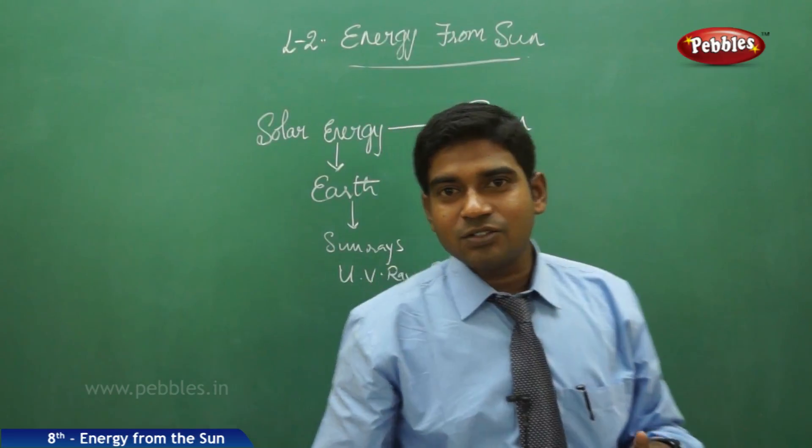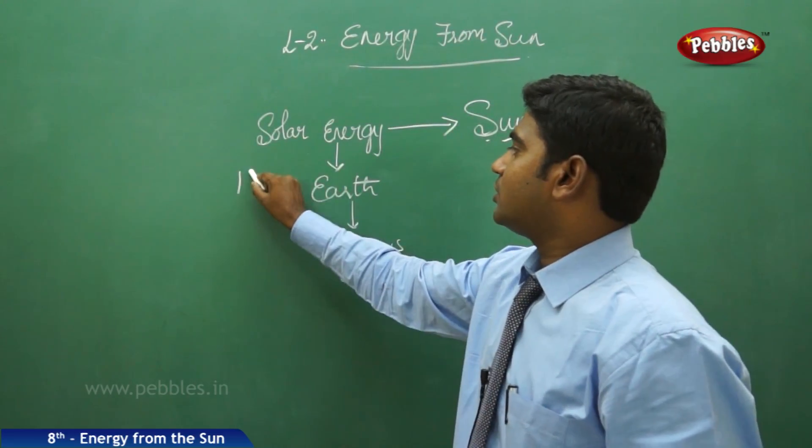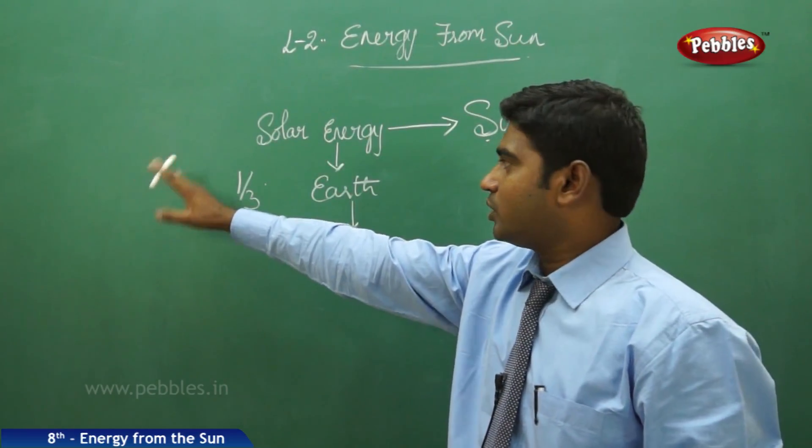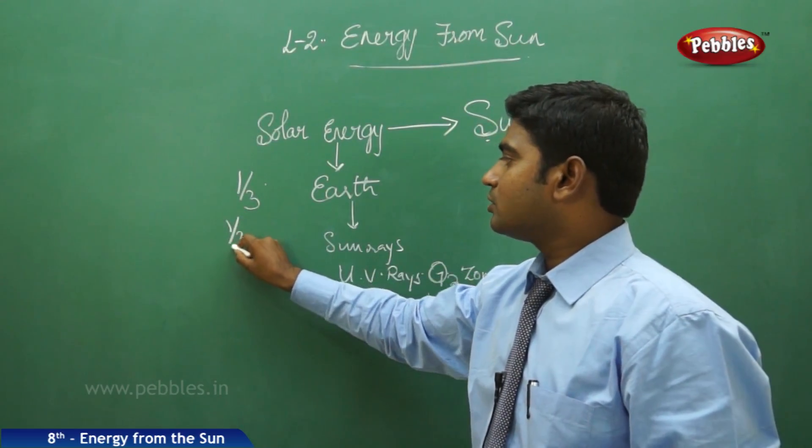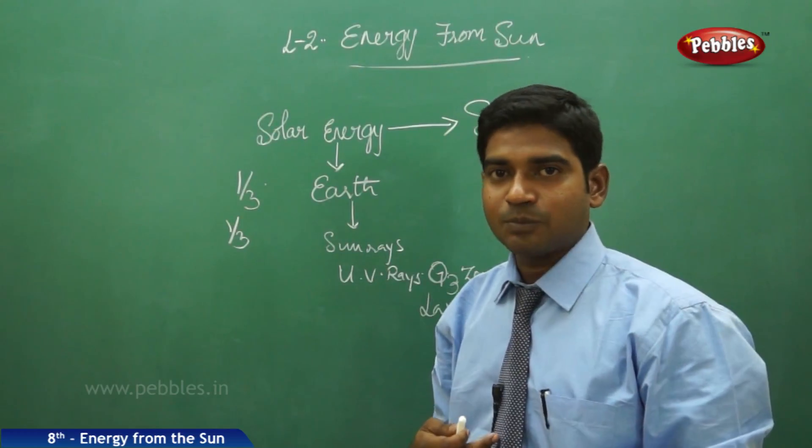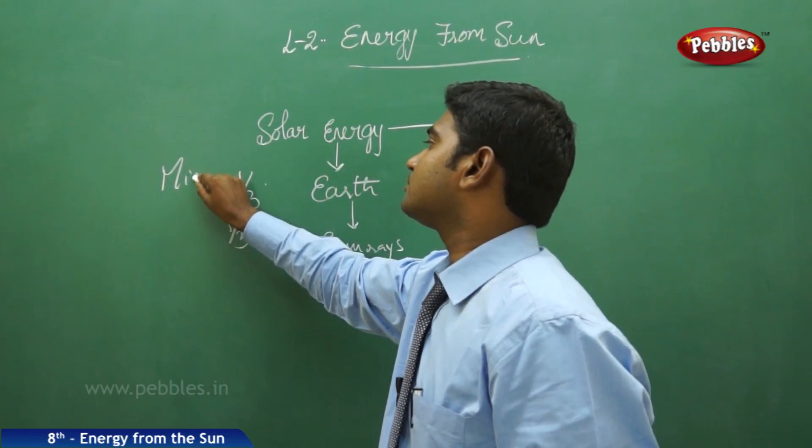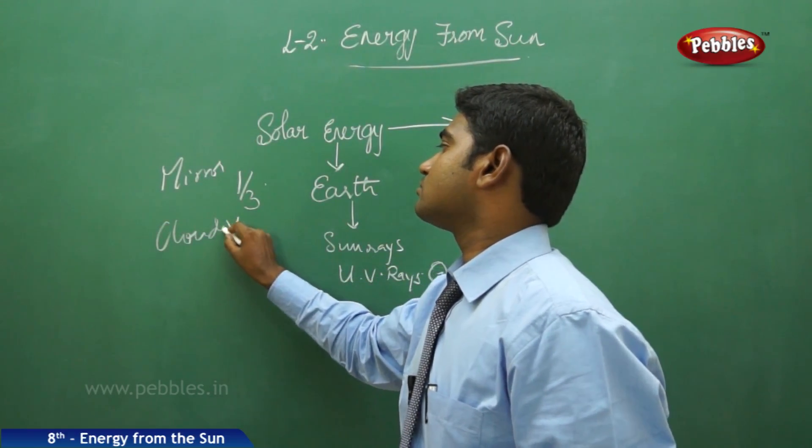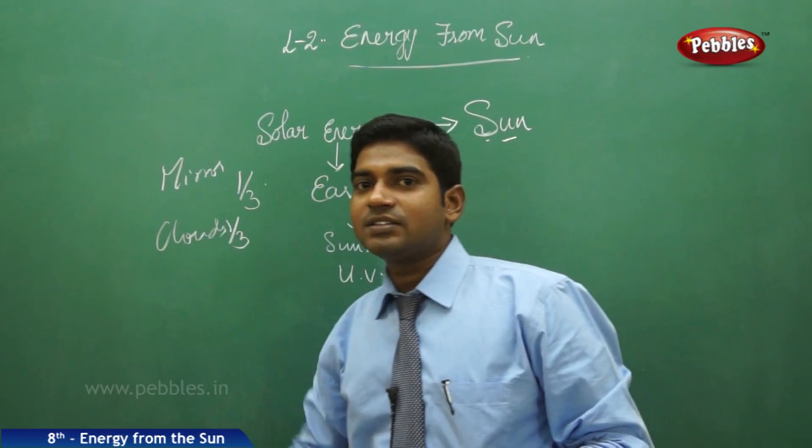As solar energy is emitted from the sun, one-third of the energy gets reflected back towards the atmosphere, and another one-third is blocked by the clouds and dust present in the atmosphere.